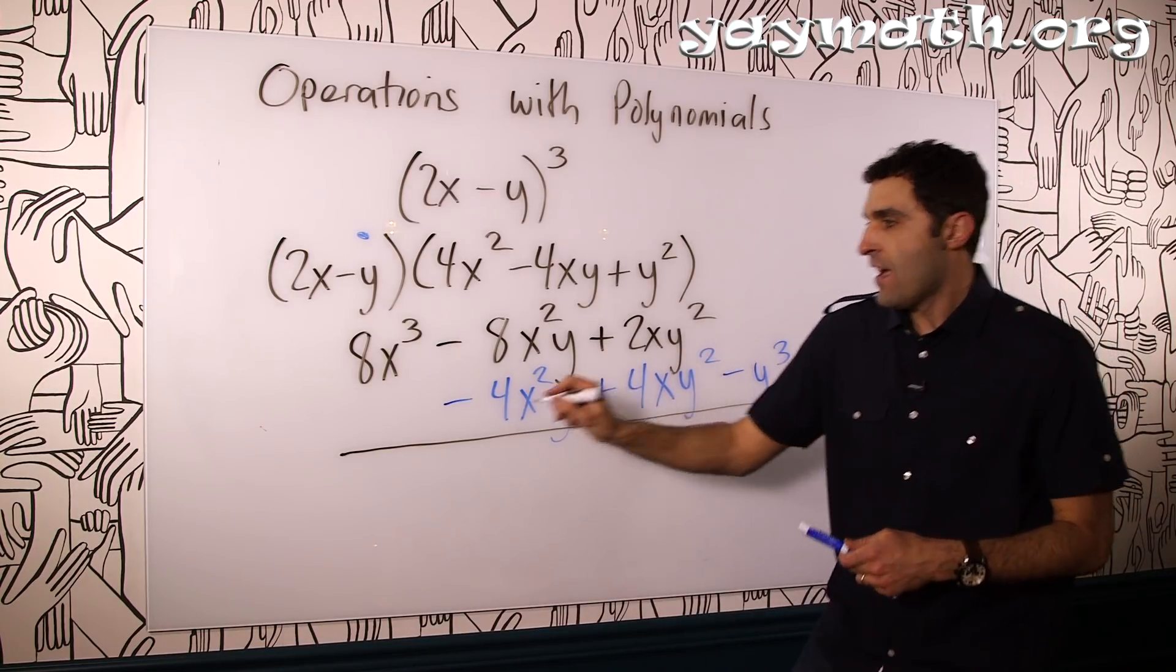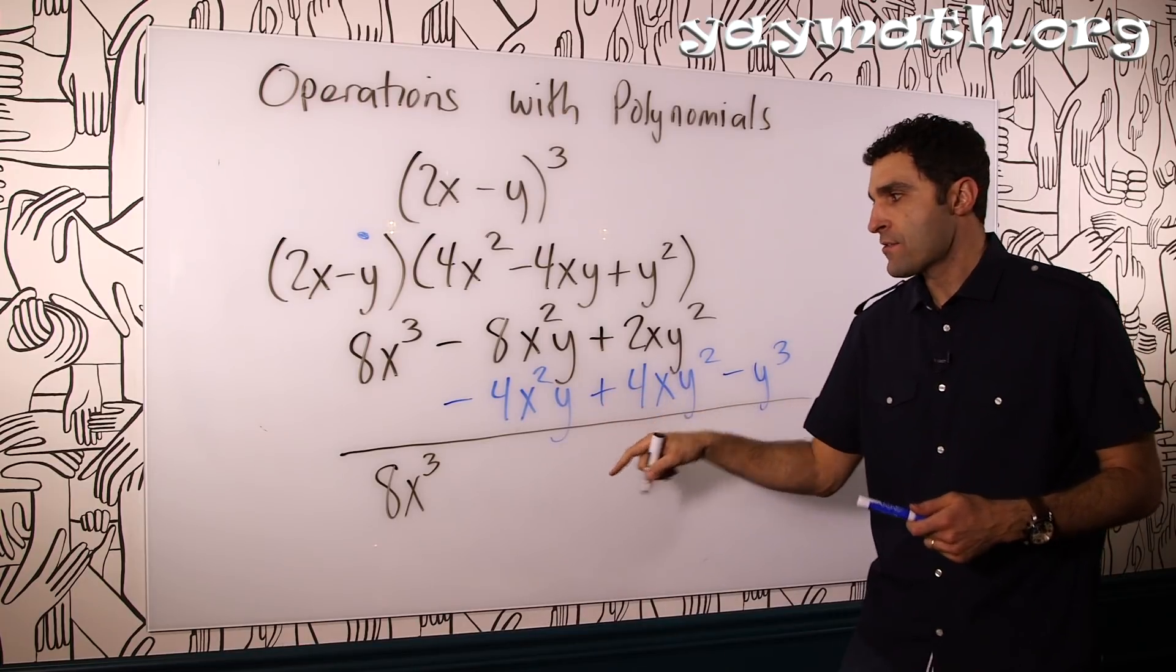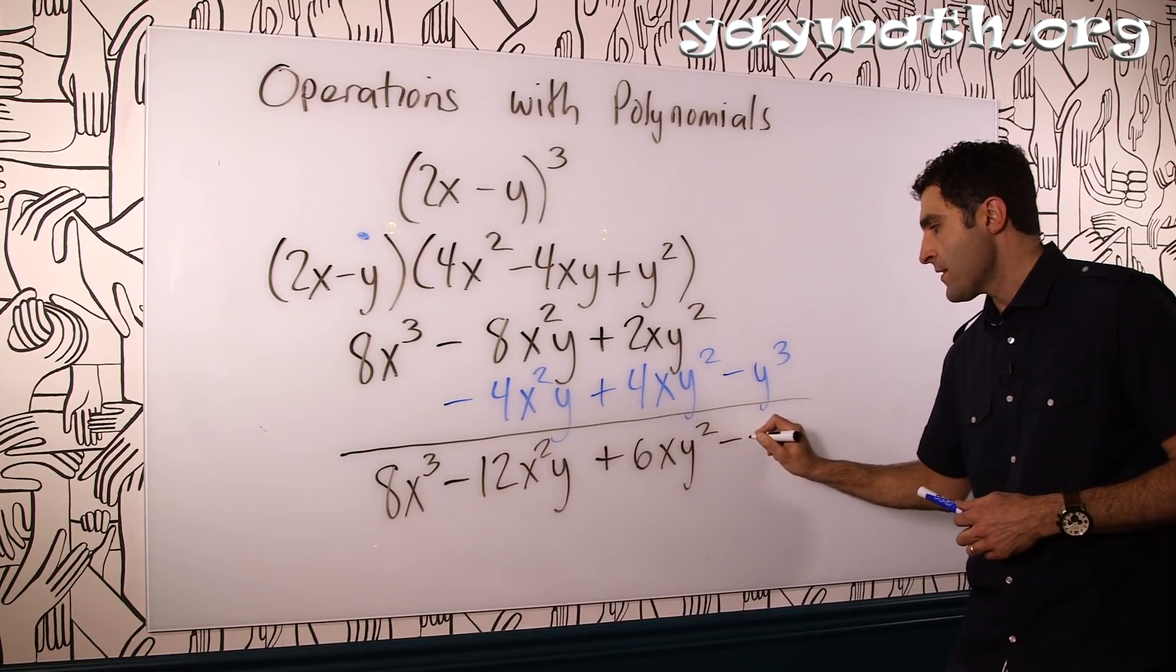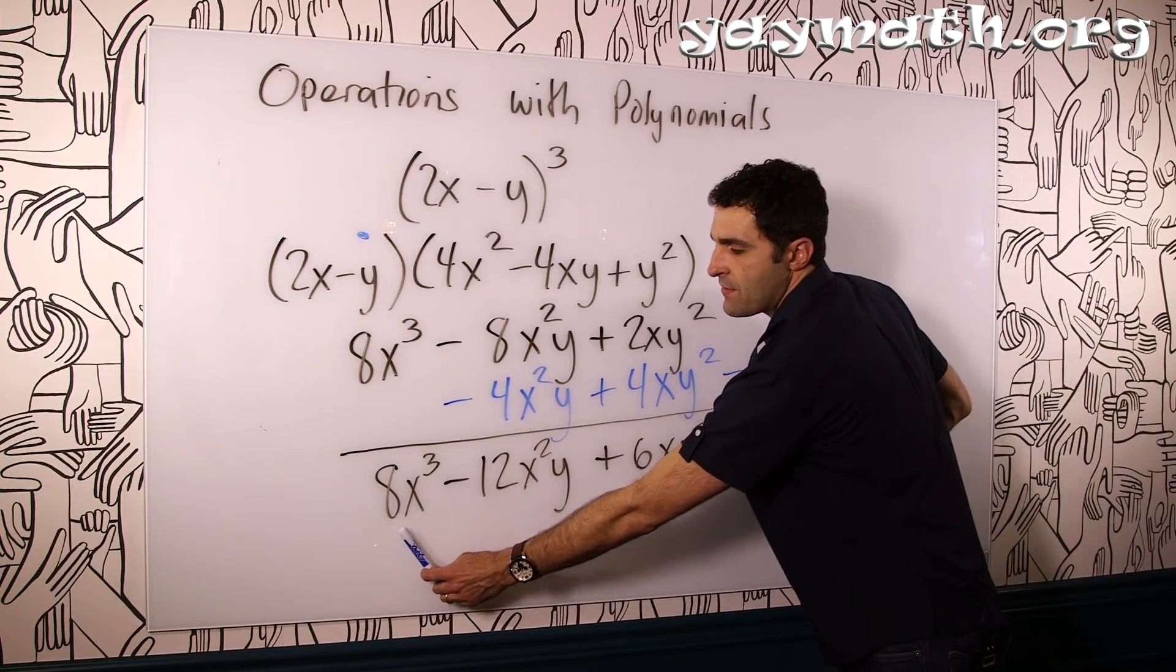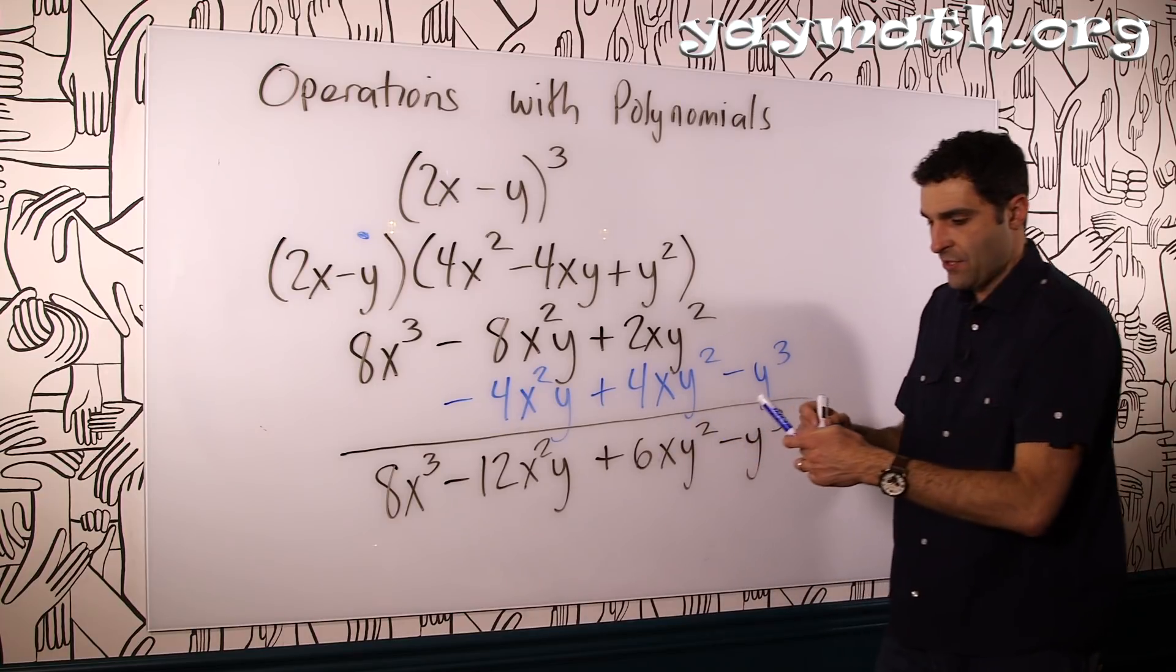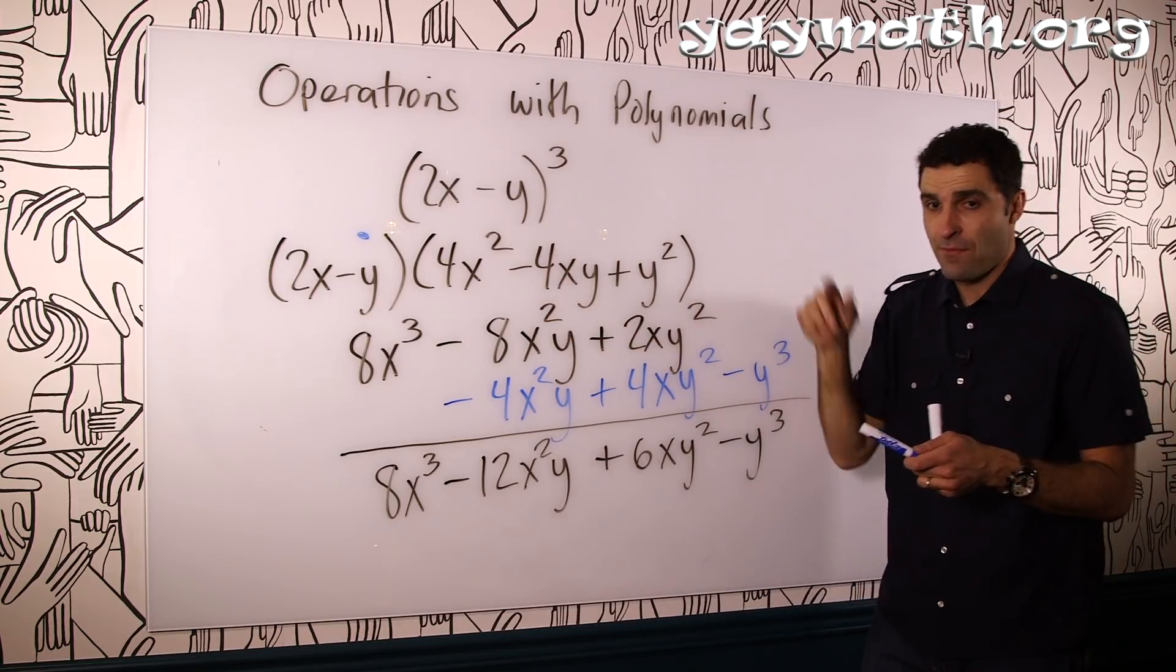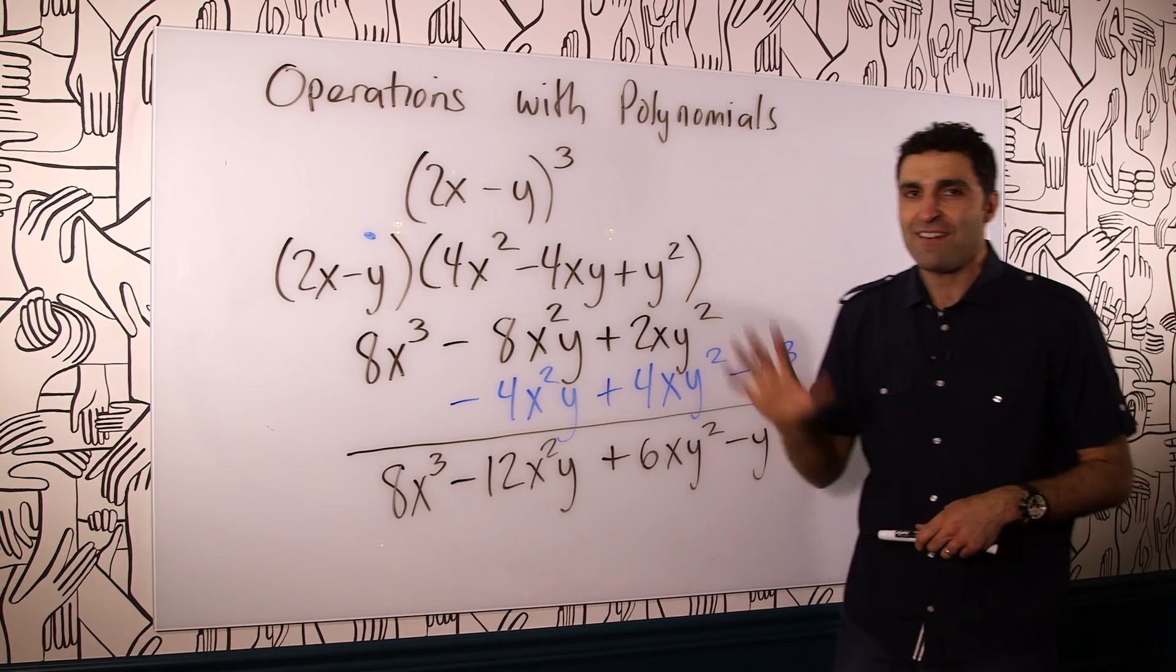8x cubed minus 12x squared y plus 6xy squared minus y cubed. So basically, it was the first two things that we said above, the first and the last, and this middle action. So don't forget that when you're squaring or multiplying binomials, two terms, to write them out and distribute them through. Thank you for watching. This is Robert from yaymath.org, and we'll see you again. Bye.